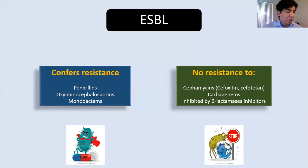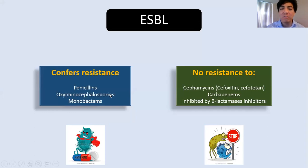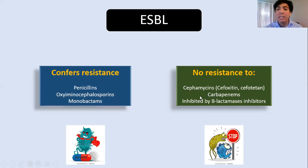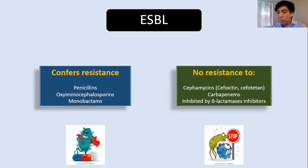ESBL confers resistance to penicillins, oxyimino-cephalosporins (third-generation cephalosporins such as ceftriaxone), and monobactams. In vitro it appears sensitive to second-generation cephalosporins, but you cannot use those clinically to treat ESBL-producing organisms. ESBL is not resistant to carbapenems and is inhibited by beta-lactamase inhibitors such as piperacillin-tazobactam (Zosyn). However, piperacillin-tazobactam is no longer considered ideal for treating these bacteria even when susceptibility is shown in vitro, due to the inoculum effect and other considerations.